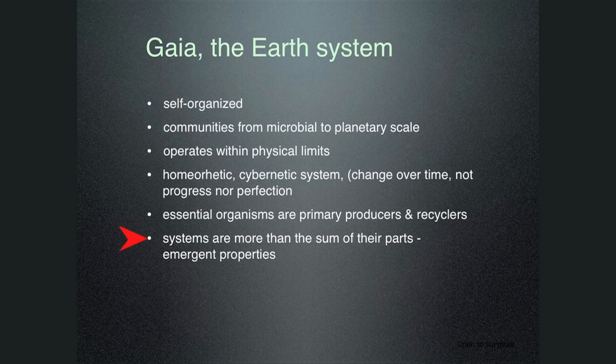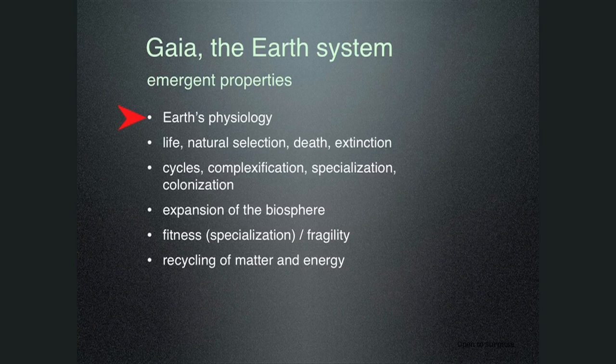Systems are more than the sum of their parts — they have emergent properties. For example, if you buy all the parts for a car, you have parts for a car. But if you put it together, you have an emergent property: transportation. Gaia's emergent properties include Earth's physiology — the ability to regulate temperature and pH — and life itself. Along with life, the various forms of death: natural selection, death from old age, and even extinction events, which seem to be cyclical and part of the system.